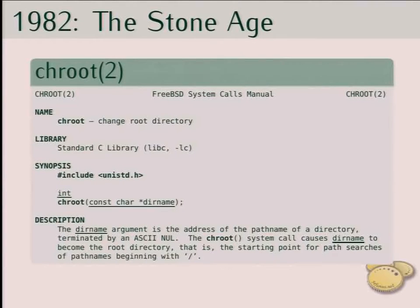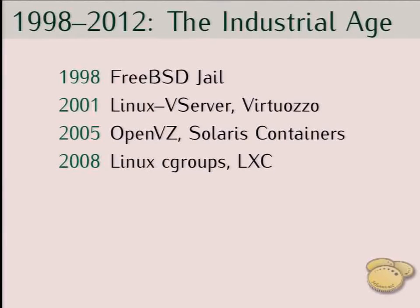The technology isn't new. It started in 1982 — as old as me, actually. chroot was introduced into UNIX that year; it's the system call that allows a process and its children to switch and see a selected directory in the file system as the root file system. Then in 1998, FreeBSD got jails, and soon other operating systems followed. These technologies add an extra level of separation and restrictions on top of chroot. The newest ones are Linux cgroups and LXC, which are what modern container systems like Docker and Rocket are based on.